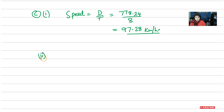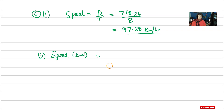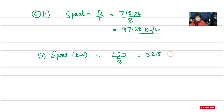For Part C(ii), we need to find speed in knots. Speed in knots is nautical miles per hour, so we use the distance in nautical miles. The distance was 420 nautical miles divided by 8, which gives us 52.5 knots. And that is all you need to do. Thank you for watching and bye for now.